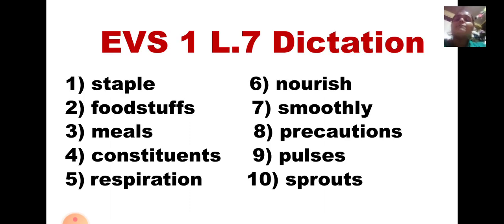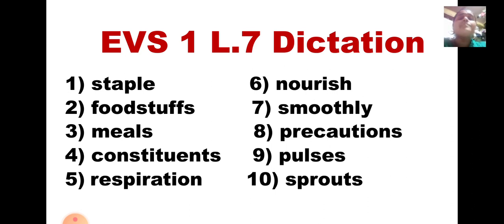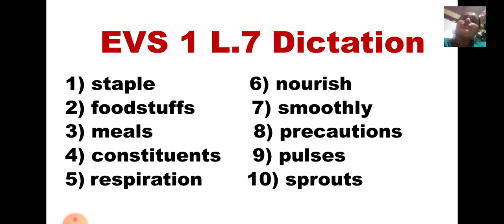Now look at these words together. First one is staple. Second one is foodstuffs. Third one was meals. Fourth one was constituents. Fifth word was respiration. Sixth word was nourish. Seventh word was smoothly. Eighth word was precautions. Ninth word was pulses. And the last word was sprouts. Clear? So this is the end of Lesson Number 7, Dictation of EBS-1.